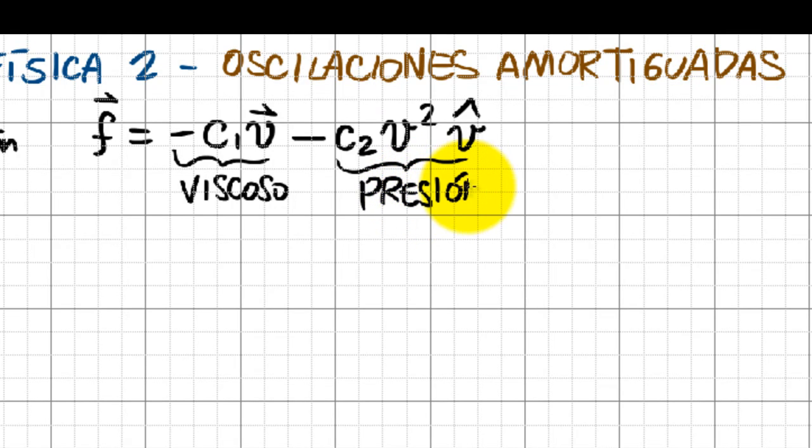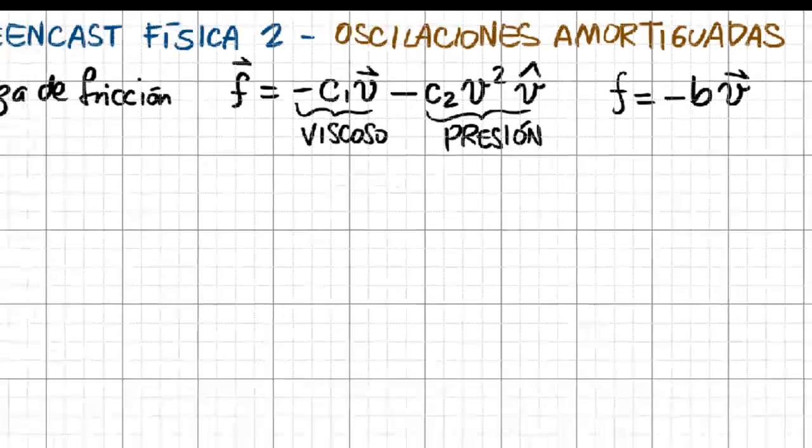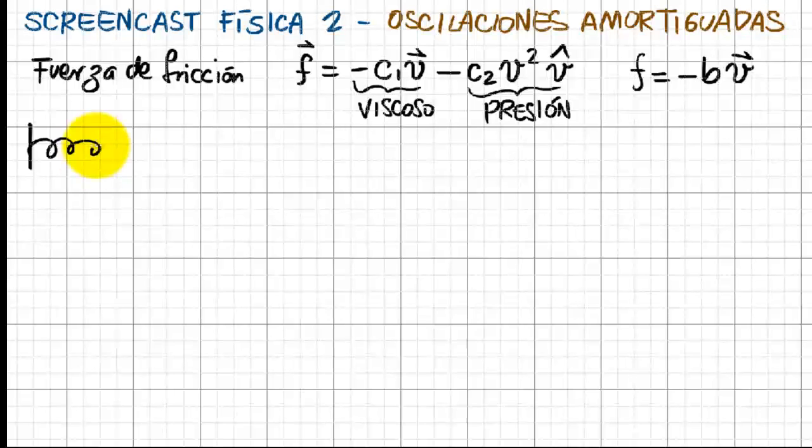Now, this term usually is important only when the velocity is big, so that is why we will only use the first term in our derivation. So our friction force will be the constant, which I will call v, v times the velocity, and this v is the damping coefficient.